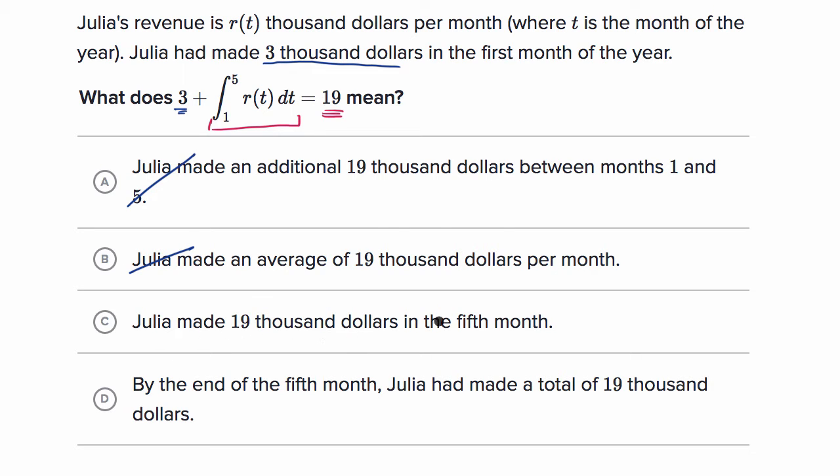Julia made $19,000 in the fifth month. Once again, this is not just saying what happened in the fifth month. This is saying we have the $3,000 from the first month and then we have the additional between months one and month five. So that's not that. So this better be our choice. By the end of the fifth month, Julia had made a total of $19,000.